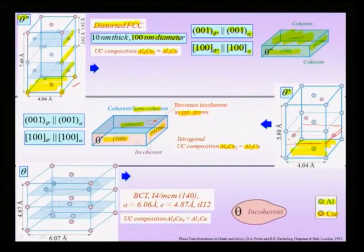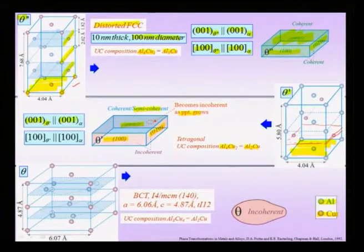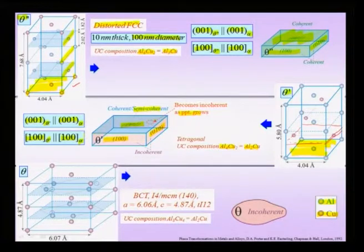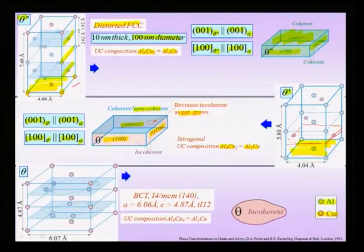Theta prime has an orientation relationship very similar to theta double prime — the [001] face of theta prime is parallel to the [001] face of alpha, and the [100] direction of theta prime is parallel to the [100] direction of alpha. The important difference is that the crystal structure and stoichiometry differ, and the precipitate faces are mostly incoherent, with only the (001) face starting coherent but becoming incoherent as the precipitate grows.